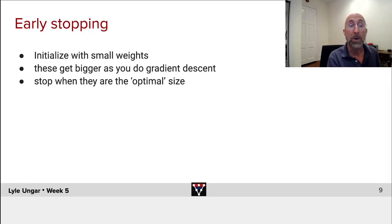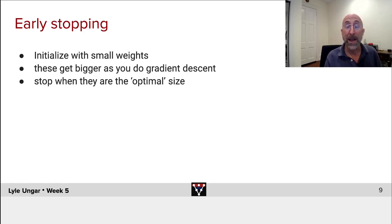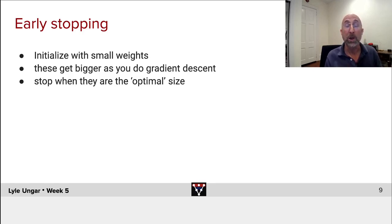But for now, just note that we start all our neural network training with small initial weights, and as gradient descent occurs, these weights get bigger and bigger and bigger. So if you stop when they're the optimal size — when you minimize overfitting — then they are shrunk the right way compared to how big they could get if you fully converged.